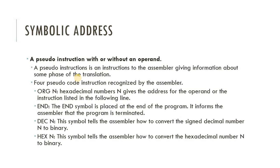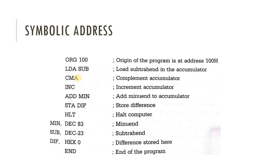The third type is pseudo instructions, with or without operands. A pseudo instruction is an instruction to the assembler giving information about phases of the translation. There are four pseudo instructions recognized by the assembler: 'ORG n' — origin — gives the starting address of the program; 'END' — placed at the end of the program to indicate termination; 'DEC n' — tells the assembler how to convert a signed decimal number to binary; and 'HEX n' — tells the assembler how to convert a hexadecimal number to binary.